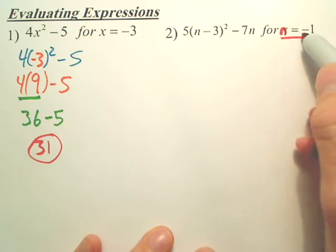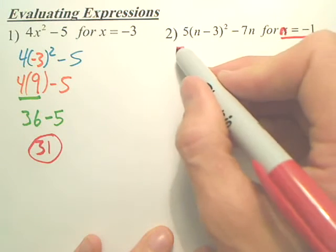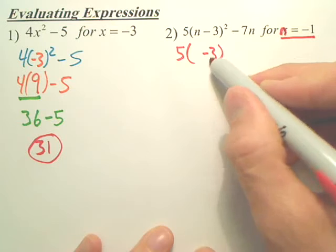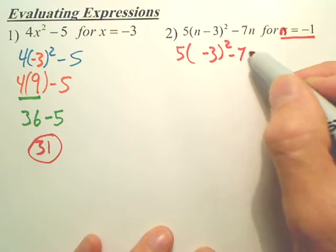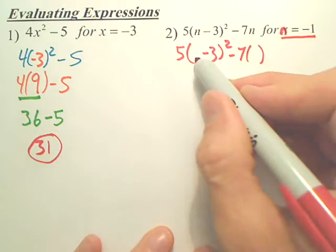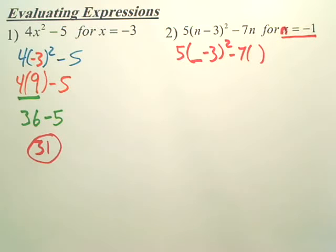So let's plug negative 1 for both Ns. So it looks something like this. Okay. So what's going to go in for N again?